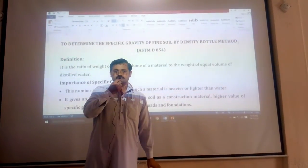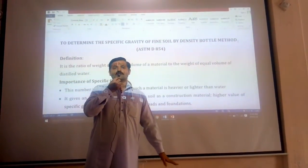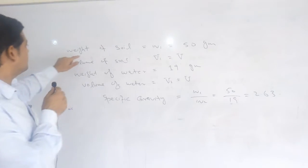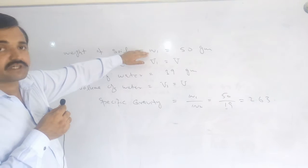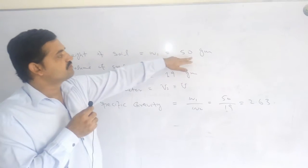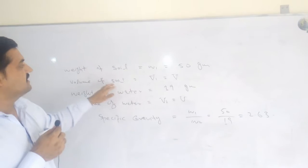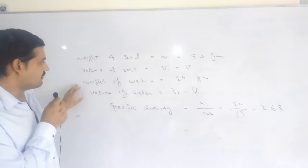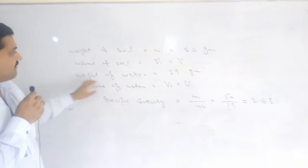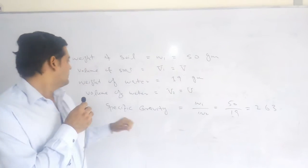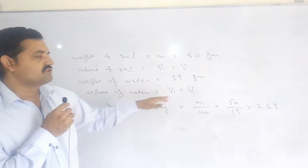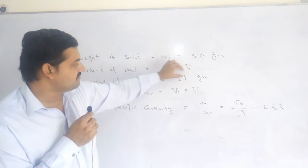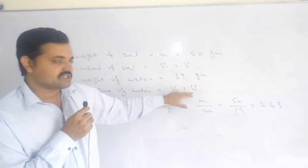Now, what is specific gravity? Specific gravity is the ratio of the weight of a given volume of a substance to the weight of an equal volume of water. Let's suppose the weight of soil is expressed as W1, which is equal to 50 grams, and the volume of that soil is V1, equal to capital V. For comparison, the weight of water is 19 grams and the volume of water is V2, also equal to capital V.